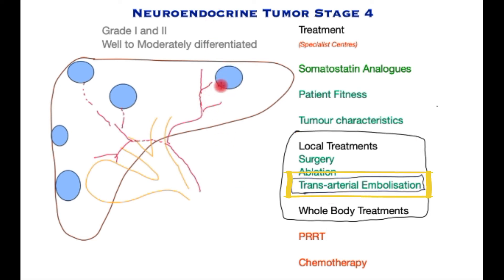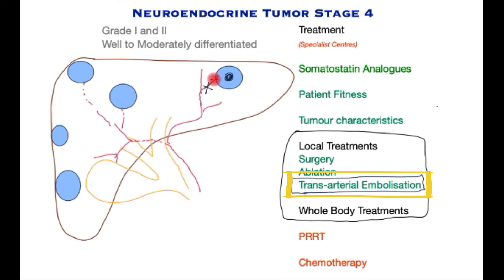Radiologists can also treat these tumors by blocking the blood supply. The main artery supplying the liver has tributaries going to tumor sites, and these can be individually plugged so that the tumor cells lose their blood supply and eventually shrink and die. Sometimes chemotherapy can be delivered directly to the tumor through the same technique, and radioactive material can also be sprayed directly into the tumor to achieve the same objective.